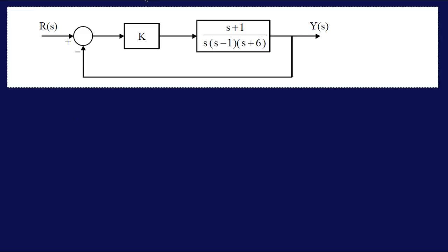Okay, so this is another example of finding the range of K for which the system is stable. We're going to use the Routh criterion, so essentially we're going to have to find the transfer function, the closed-loop transfer function. Here we have Y(s) over R(s).